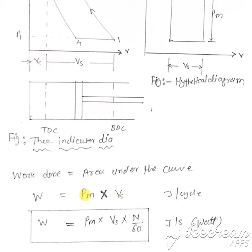Now, PM is the pressure which is in Pascal or Newton per meter square, VS is the swept volume. Then the unit of this will be Joule per cycle.